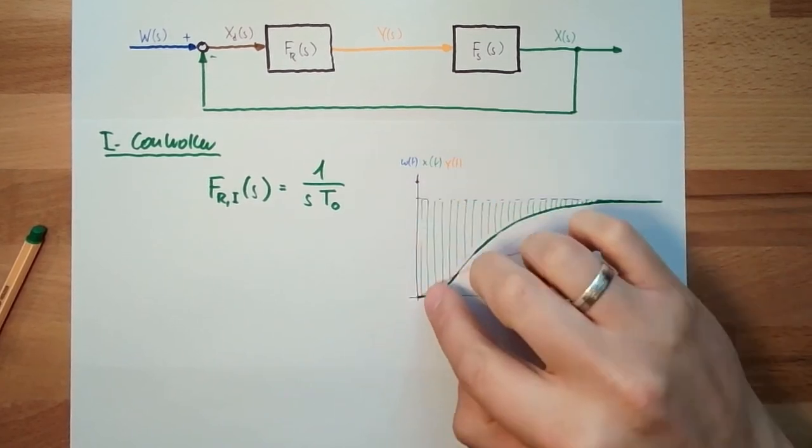The downside, if something suddenly happens, like in this example, there is a step. In the beginning, it's not changing anything, it's acting like it just doesn't care. This is the downside.